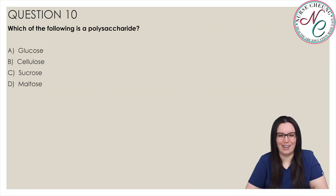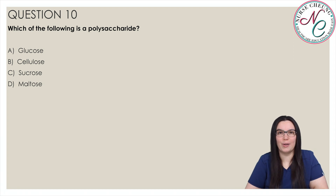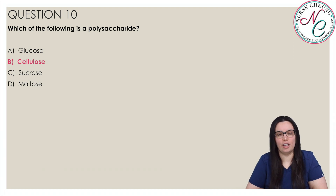Question 10: Which of the following is a polysaccharide? Is it A) Glucose, B) Cellulose, C) Sucrose, or D) Maltose? The correct answer is B) Cellulose. Cellulose is a polysaccharide. Maltose and sucrose are disaccharides, and glucose is a monosaccharide.